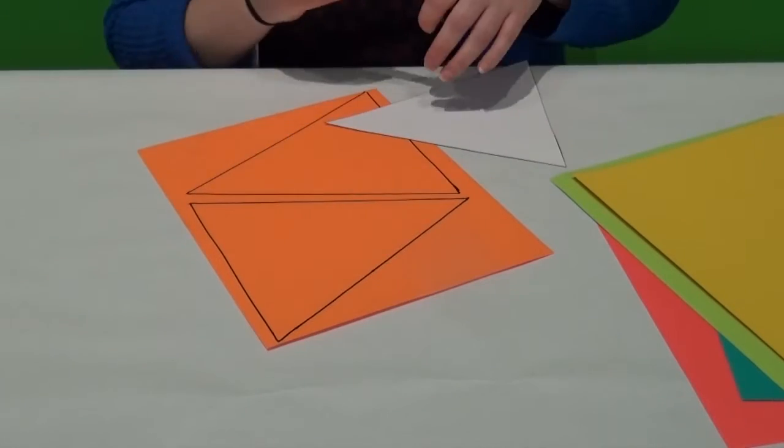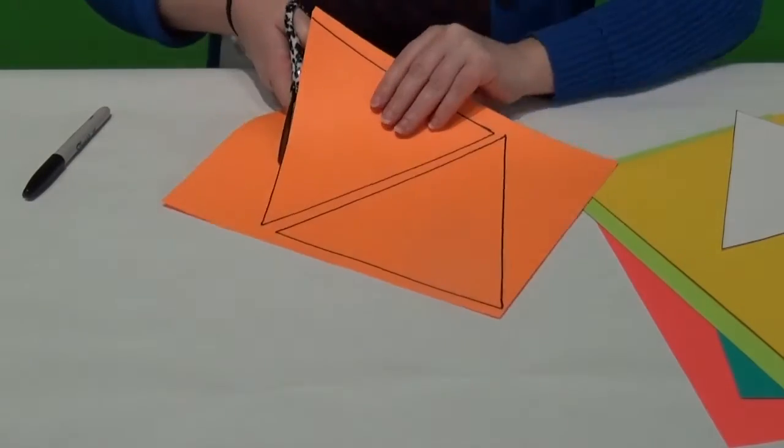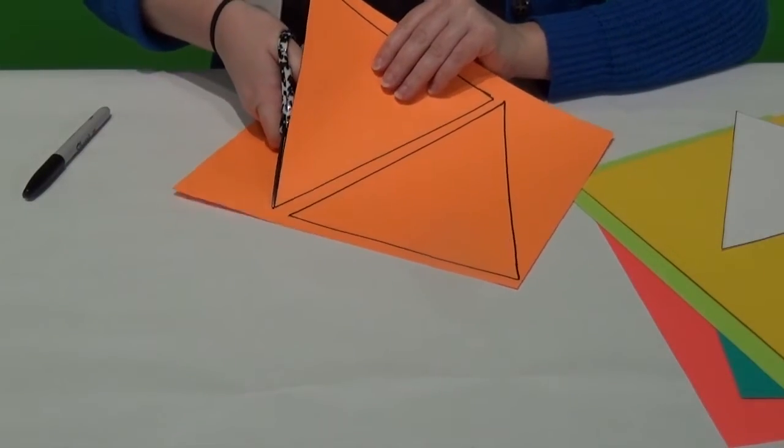First, draw and cut out the triangles. Make them large enough that the letters are easy to read. We've provided a template in the description below to help you make consistently sized triangles.